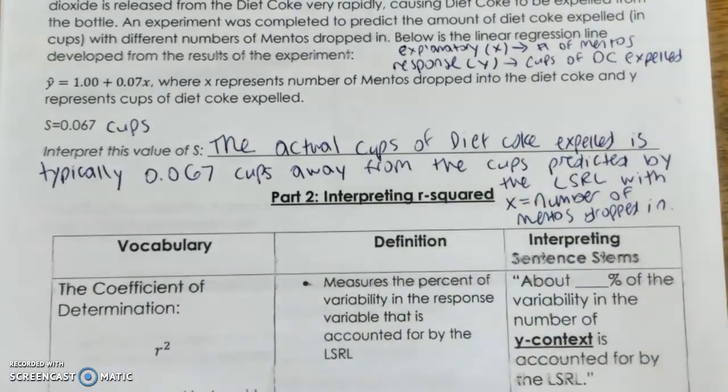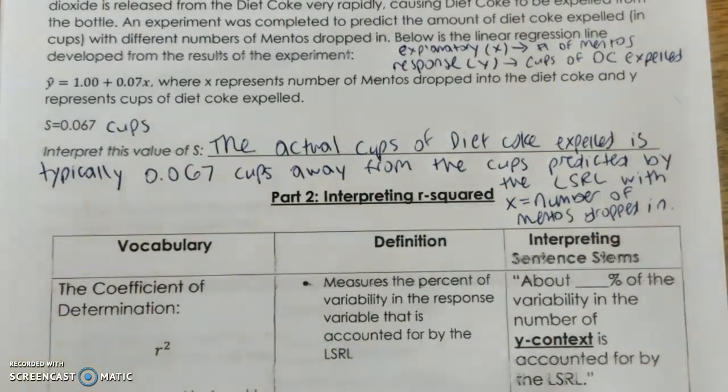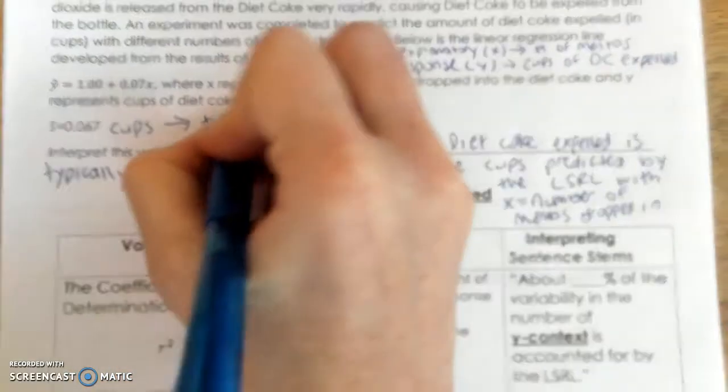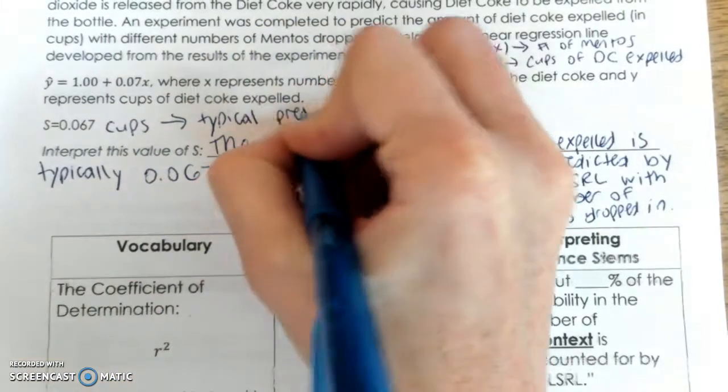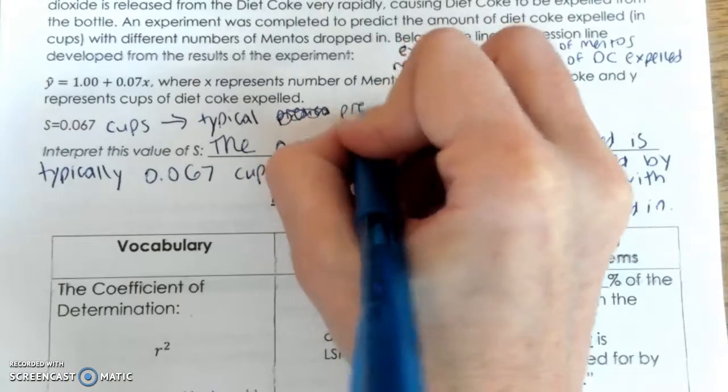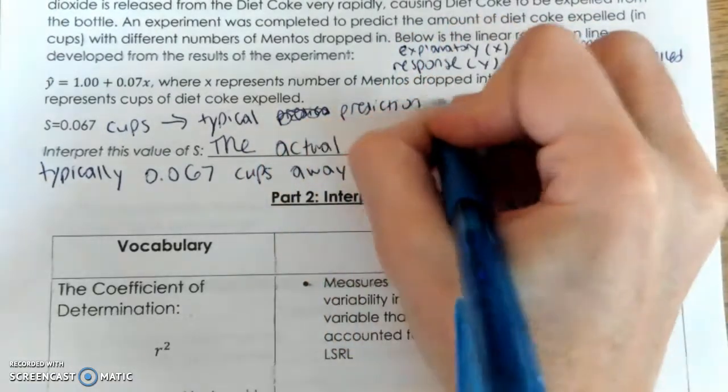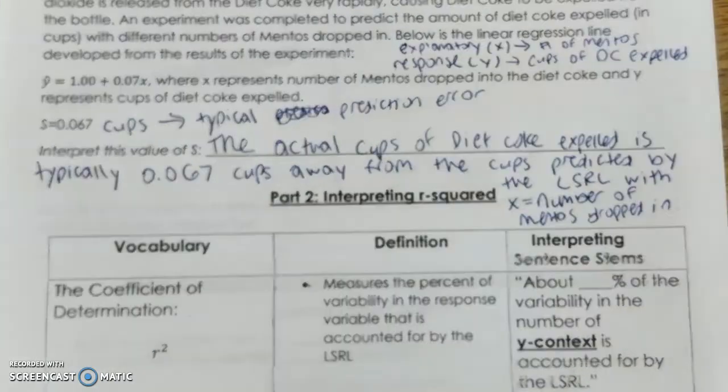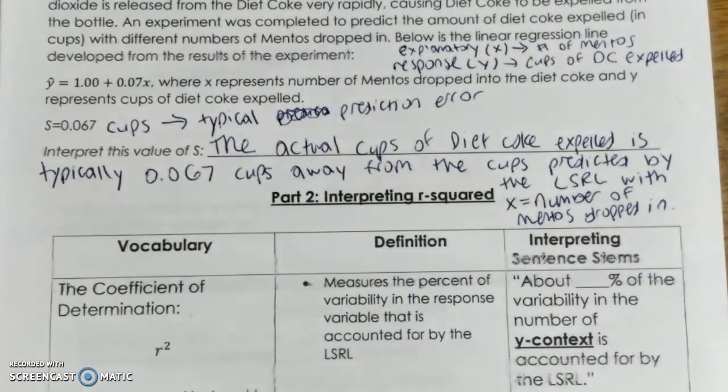All right, nice job. So remember, our S is our typical prediction error. Oh my gosh, typical prediction error. My brain just works so fast, you know? That's why it makes errors like that. All right, so that is our standard deviation of residuals, our S, and that's our interpretation of S.